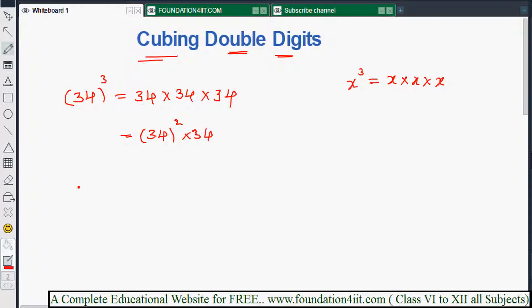First of all we take 34 square. 34 square method already explained in previous videos. Using the diagram: left side is 9, right side is 4, so 16. And middle, 3 × 4 is 12, double of 12 is 24.